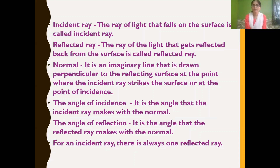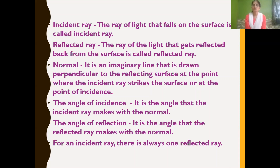So children: the incident ray is the ray of light that falls on the surface; the reflected ray is the ray that gets reflected back after striking the surface; and the normal is an imaginary perpendicular line drawn to the reflecting surface at the point of incidence. The angle between the incident ray and the normal forms the angle of incidence, and the angle between the reflected ray and the normal forms the angle of reflection.